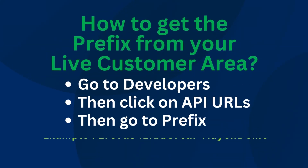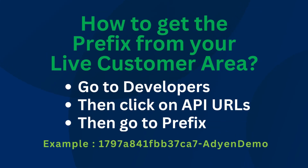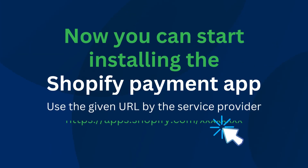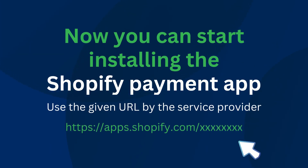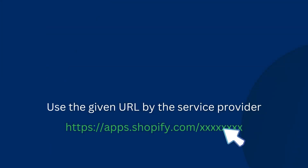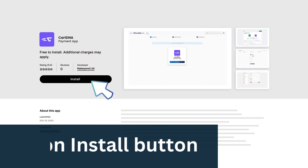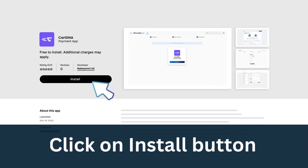How to get the prefix: from your live customer area, go to Developers, then click on API URLs, then go to Prefix. Now you can start installing the Shopify payment app. Click on the Install button.